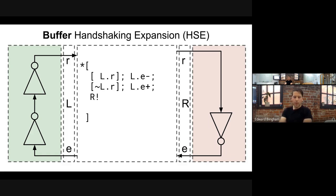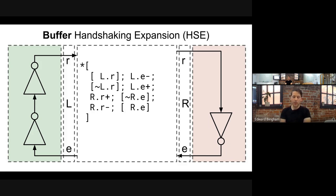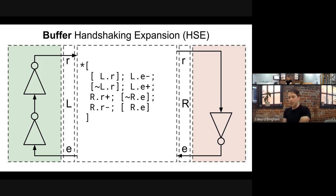For the send on R: raise the request rail on R, wait for the enable on R to lower signifying the receiver is done with the data, lower the request rail on R, then wait for the enable on R to raise signifying the receiver is ready again. We'll be walking through what's called formal synthesis — a quick overview for now; we'll go deeper in the third module.